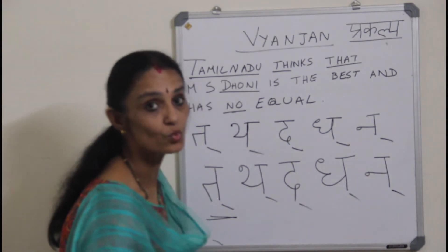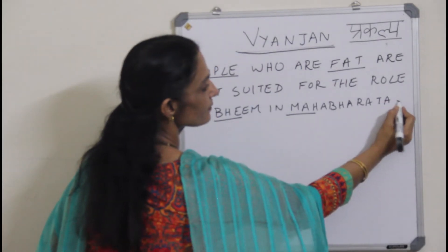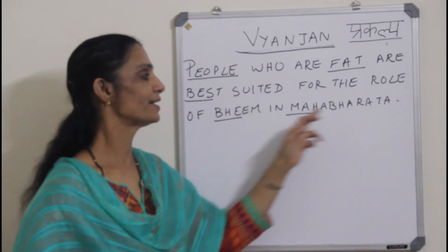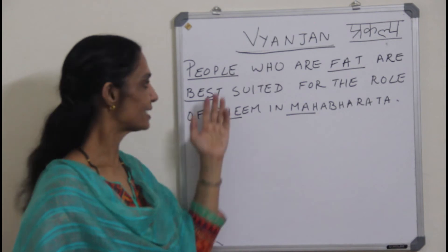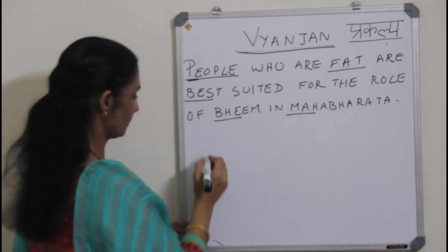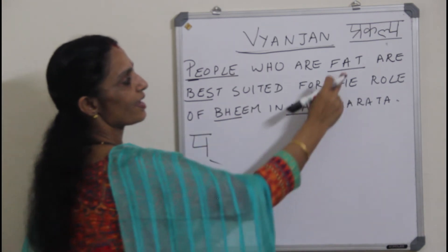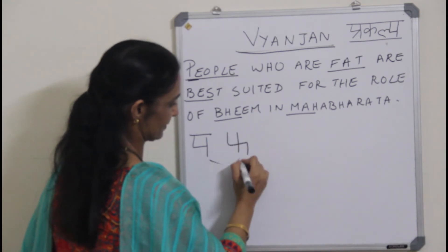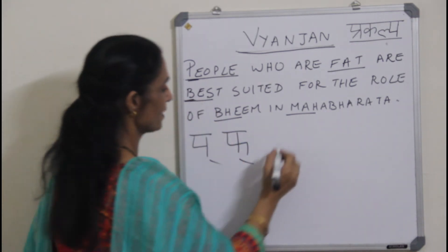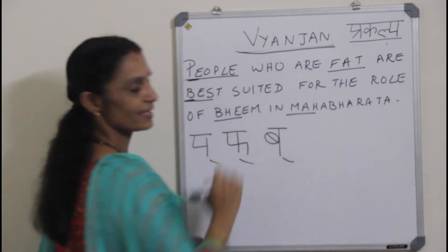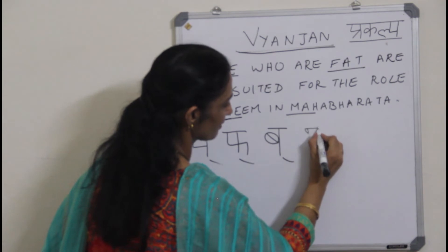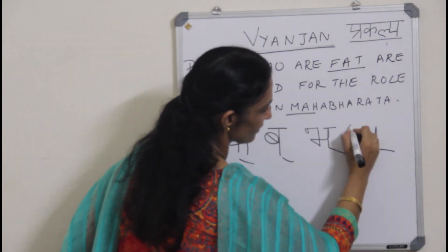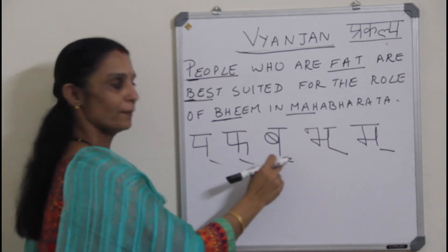Let us move on to the next cluster. The sentence is: 'People who are fat are best suited for the role of being in Mahabharata.' The five words are underlined. I take P from people, Ph from fat — pronounced as Th — B from best, Bh from Bheem, and Ma from Mahabharata. So they are Pa, Ph, Ba, Bha, Ma.